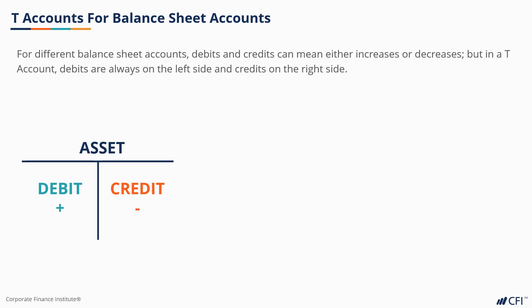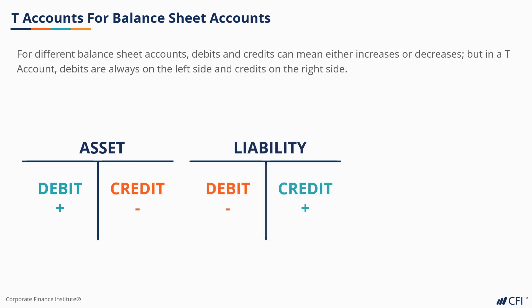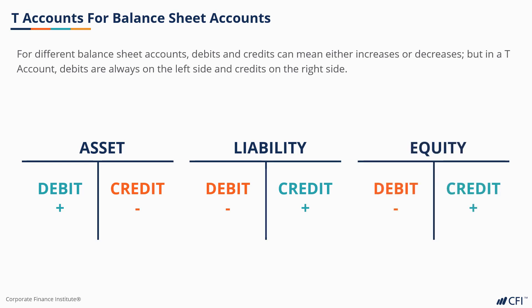For liabilities, it's the opposite — debits represent a decrease in value and credits an increase. And in the third section, the shareholders' equity portion, debits represent a decrease and credits an increase.